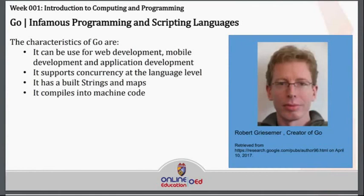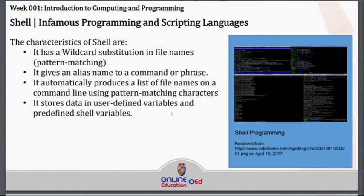We also have the Go programming language. Its characteristics are: it can be used for web development, mobile development, and application development. It supports concurrency at the language level, has built-in strings and maps, and compiles into machine code. We also have Shell. Its characteristics include wildcard substitution in file names, alias naming for commands, automatic file name list production using pattern matching, and storing data in user-defined and predefined shell variables.